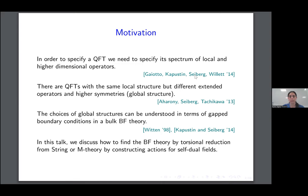In a given quantum field theory with a given local structure, we can have different kinds of these extended operators. We have different choices of which extended objects we realize in the theory. Theories with different extended operators would have different symmetries. And these symmetries, they can be classified via anomaly inflow by a theory called the BF theory in one dimension higher.